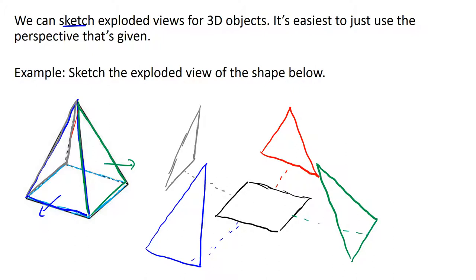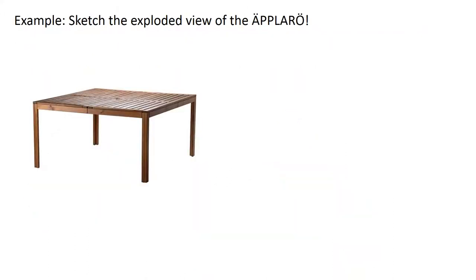Now let's do an example from something from real life. This is just a table that I looked up on IKEA, and I love the name of it, which is partly why I picked the table. I wanted something simple, but I also love the name of a lot of IKEA furniture - the ÄPPLARÖ, that's great.